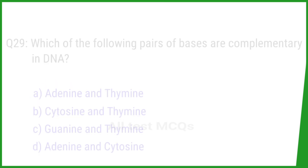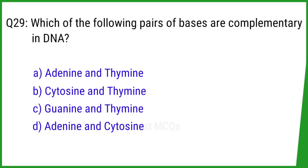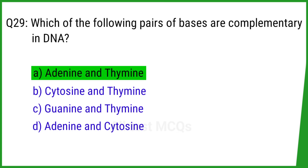Question number 29. Which of the following pairs of bases are complementary in DNA? The right answer is option A: Adenine and thymine.